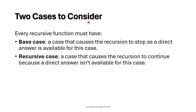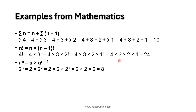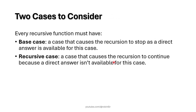When writing a recursive function you need to consider two cases. The first is the base case — this is the case that causes the recursion to stop. In the previous examples, we knew the direct answer for factorial of 1, for 2 to the power 1, and for the sum of the first 1 natural number — those are our base cases. The second case is the recursive case, which causes the recursion to continue because a direct answer isn't available for that particular case.